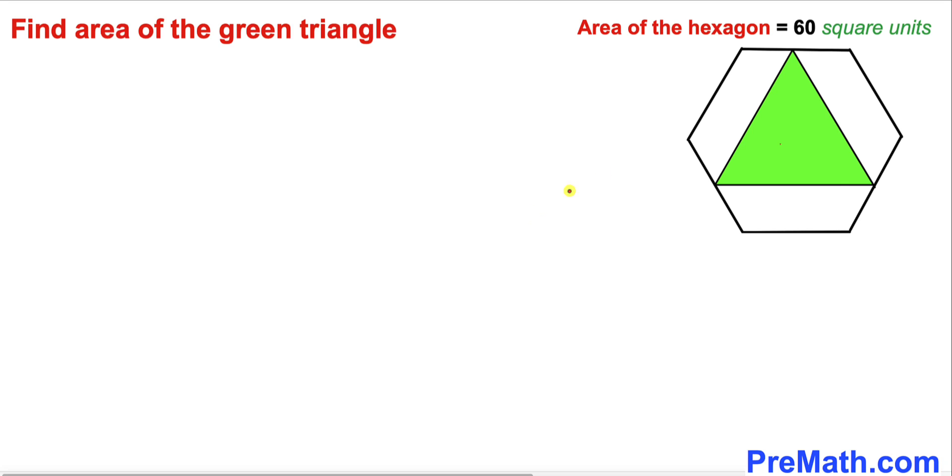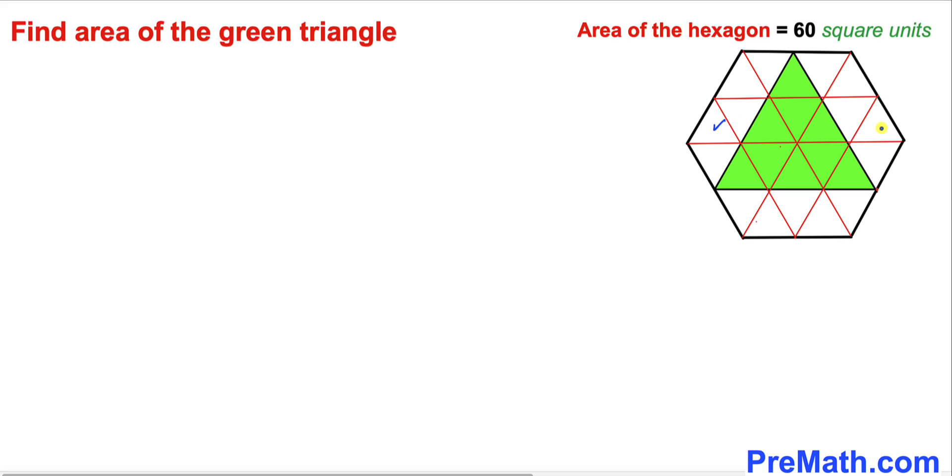Let's do some construction. Let's go ahead and connect these opposite vertices of this hexagon. Let me connect this with this one, and likewise I have connected these vertices as well. Now let's connect these two points as well, and likewise I have constructed these lines.